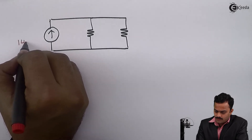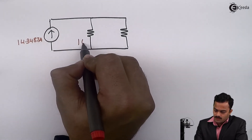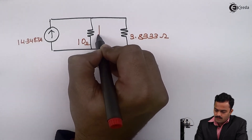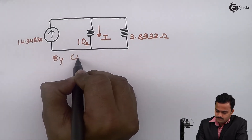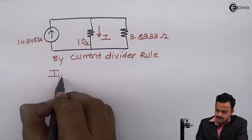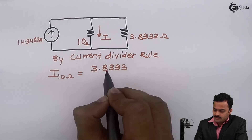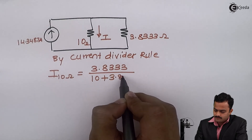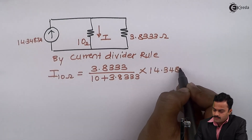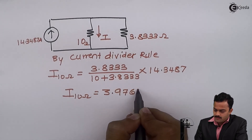The final circuit has 14.3487 ampere with two resistors: 10 ohm and 3.8333 ohm. I can now apply the current divider rule. The current flowing through the 10 ohm resistor equals the parallel resistor (3.8333) divided by the sum of both resistors, multiplied by the total supply current (14.3487 ampere). Solving this gives 3.9761 ampere.